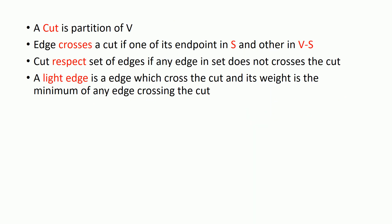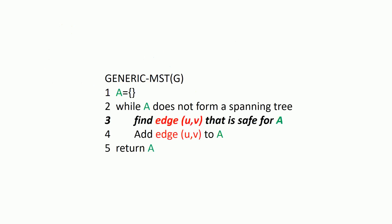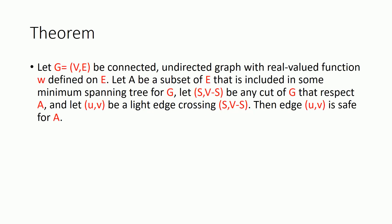These are the definitions of the terms I have discussed. Now back to our main problem — finding an edge that is safe for A. Here is a theorem which gives us a methodology to find such an edge. It says that to find a safe edge for A, we need to have a cut which respects set A, and if we find a light edge for that cut, that light edge is safe for A.